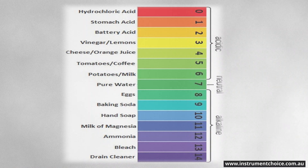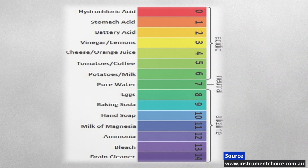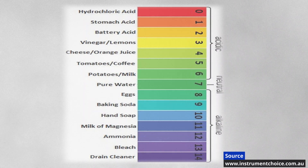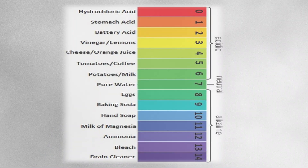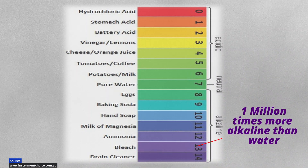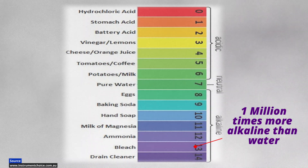The pH scale goes from zero to 14, and generally speaking most things we deal with in everyday life sit somewhere around the seven mark — distilled water is a perfect seven. The scale is also logarithmic, meaning unlike normal scales it moves at an exponential rate. As a real-world example, something at pH 13 is one million times more alkaline or basic than something sitting at pH 7.